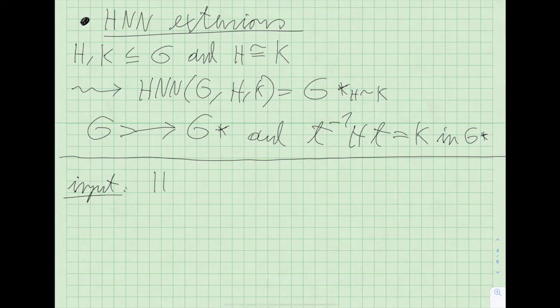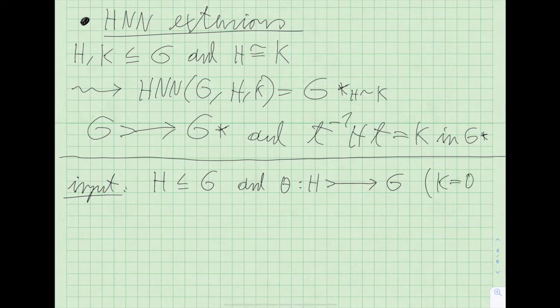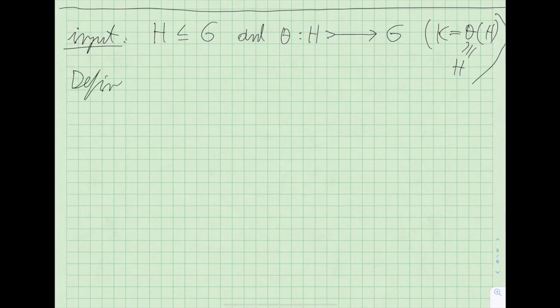The input is one subgroup H of the bigger group G, and an embedding — say theta — of H into G, which doesn't have to be the inclusion map. You can think of K above as the image of H under theta, which is of course isomorphic to H. These formulations are equivalent, but this one is a bit more slick.